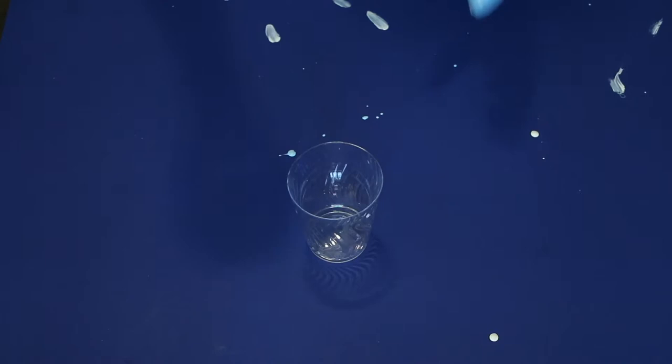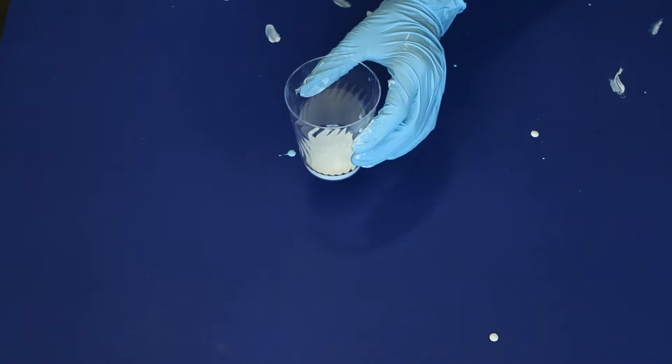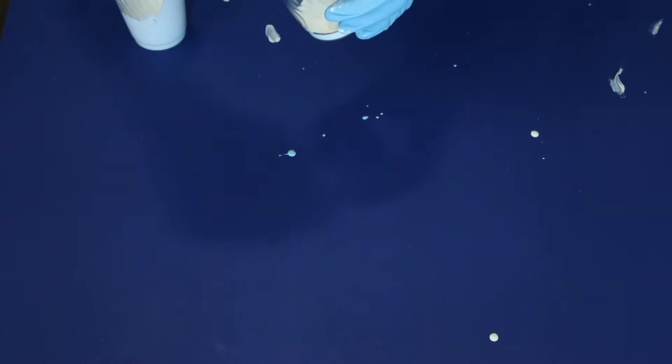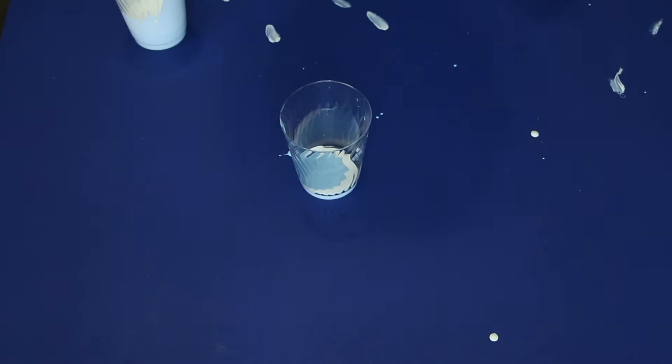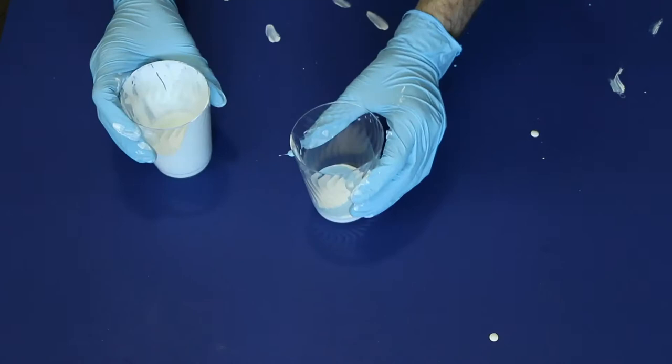Our first technique is going to be called flip cup, and you're going to start by pouring all of your colors into one single cup. There aren't any rules to the order that you should put the colors in the cup, but in general the first colors you pour in will come out on top. Also, try to pour the colors into the cup slowly to avoid too much mixing before you flip the cup onto the canvas.